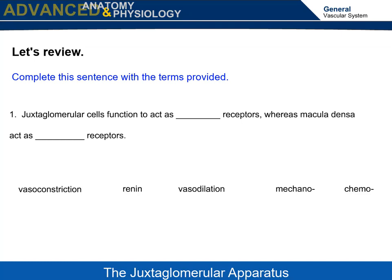Let's review. Complete this sentence with the terms provided: juxtaglomerular cells function to act as blank receptors, whereas macula densa act as blank receptors. Answer: juxtaglomerular cells function to act as mechanoreceptors, whereas macula densa act as chemoreceptors.